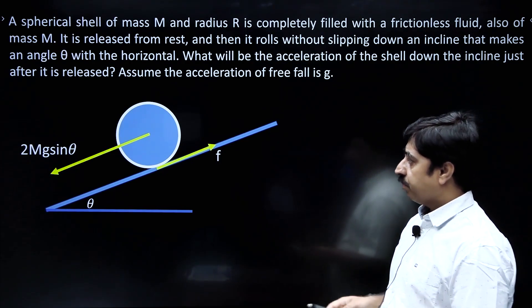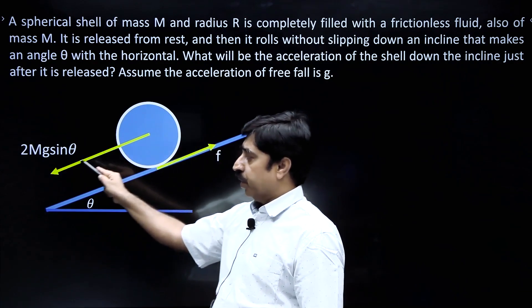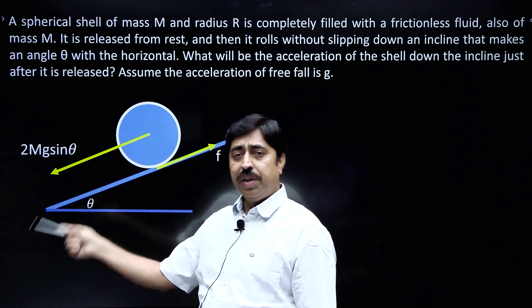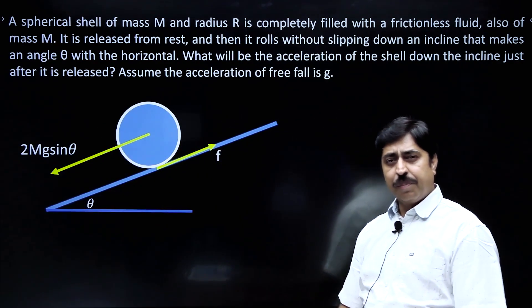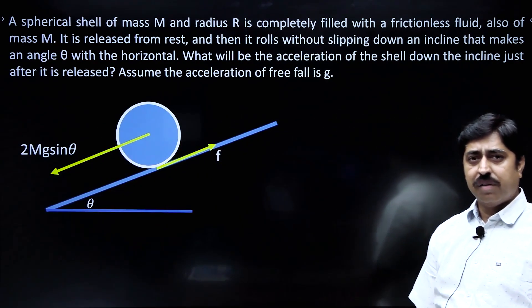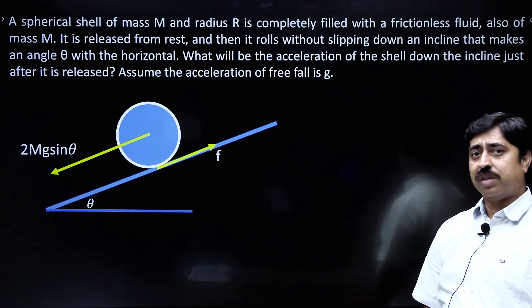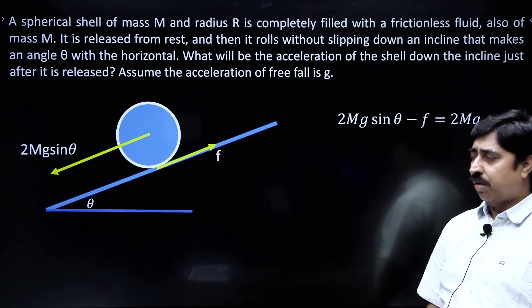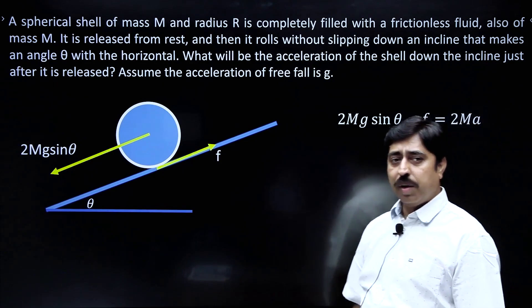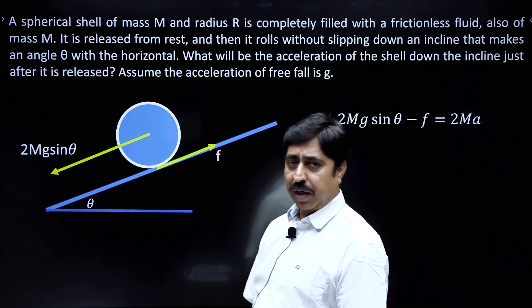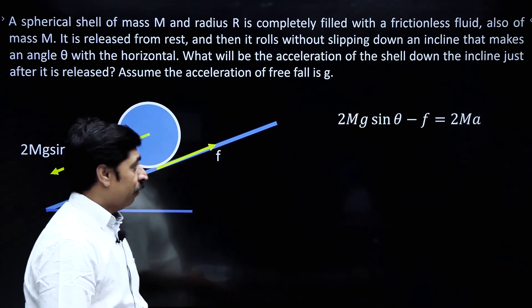In the direction of motion — down the incline — we can write Newton's second law, F = ma. The equation will be: 2mg sinθ − F = 2ma.